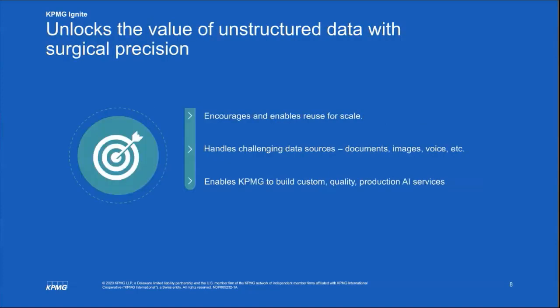It unlocks the value of unstructured data with surgical precision. We want to get the content out of documents that helps the business make decisions. Many times you'll have hundreds of pages of documents, but there are only certain sections, clauses, dates, or information that the business needs to make a business decision. The pipelines built on top of the platform allow documents to become more enriched so you can extrapolate out the right information to make the right business decisions.